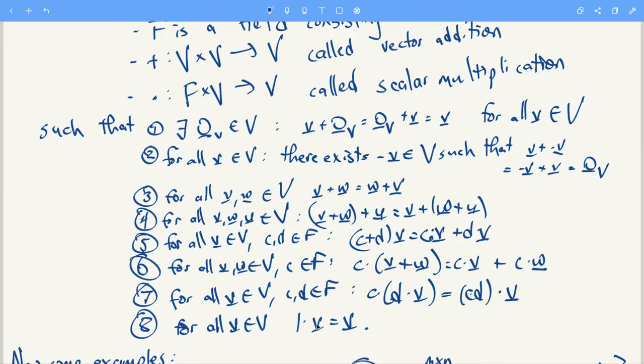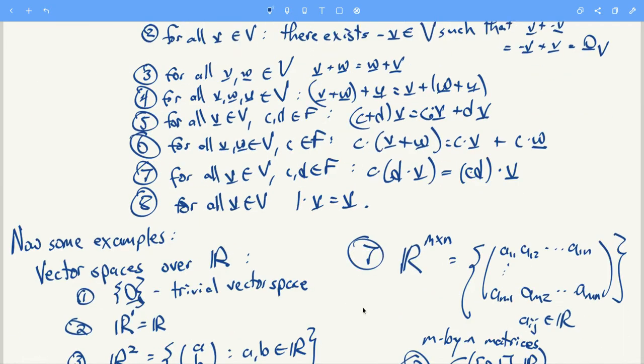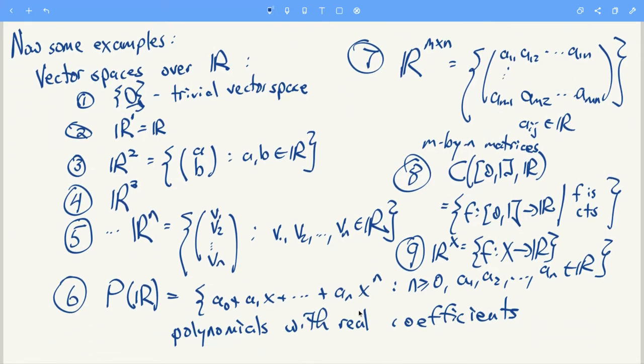And finally, the last property is that one times a vector is just a vector. Some quick examples over the field R. We have whatever vector space you're looking at, just put the zero vector by itself and that you get the trivial vector space, also known as the zero vector space. You have R^1 which is just a set of real numbers, so the set of real numbers forms the vectors and the real numbers are also the scalars. Addition of vectors is just regular addition of real numbers. Scalar multiplication is just regular multiplication of real numbers and things like that.